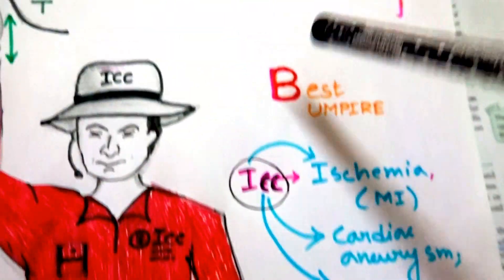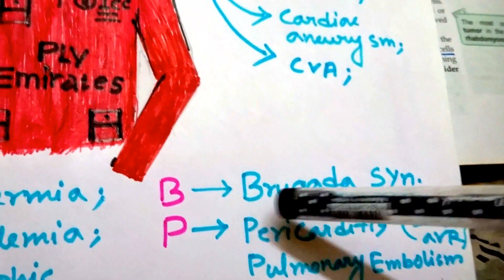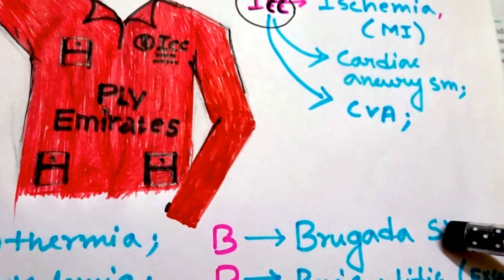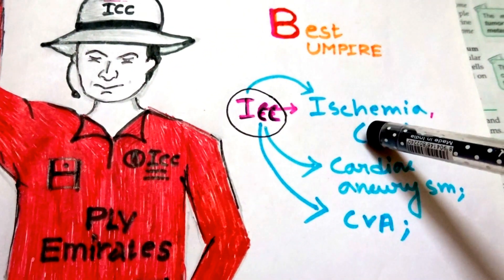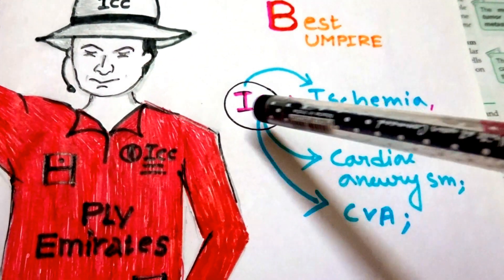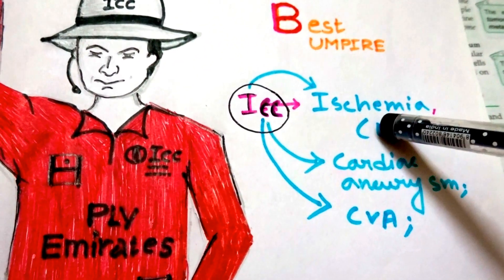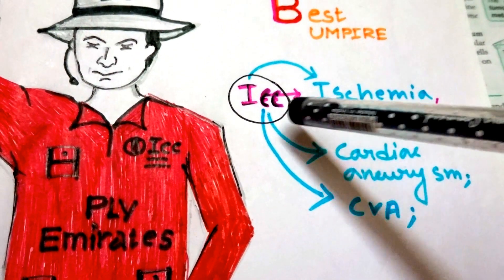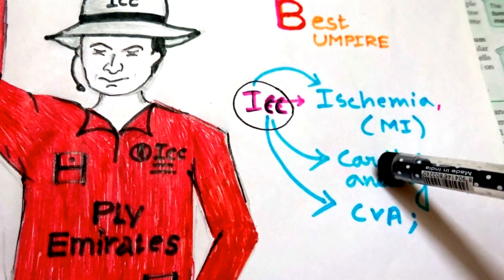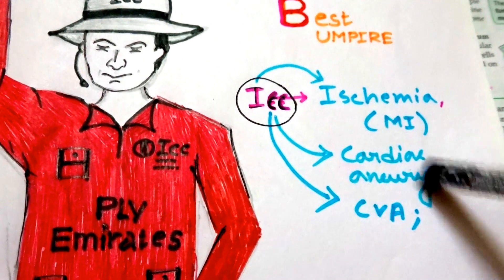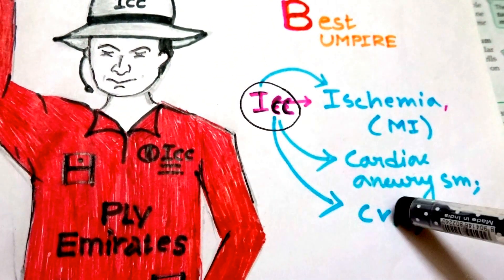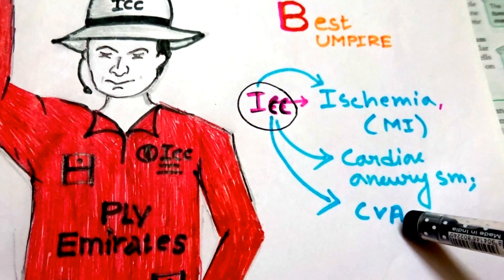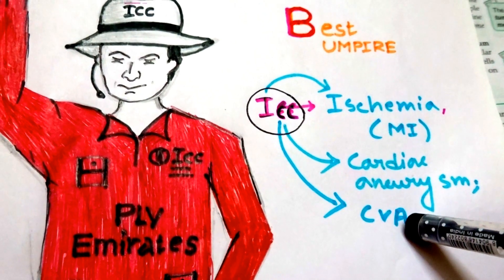The word 'best umpire' — B codes for Brugada syndrome. And ICC: I stands for ischemia, that is myocardial infarction; C stands for cardiac aneurysm; and another C codes for cerebrovascular accident.